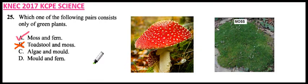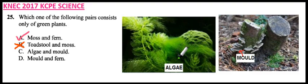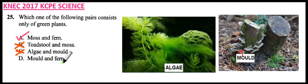We look at C: algae and mold. Let's see what kind of plants these are. Algae are those greenish plants that grow sometimes in stagnant water. This is algae and this is mold. If you go to the forest where there is a tree stump, you see some white growing plants — those are what we refer to as molds. So you can see the algae is green but the mold is not green; it is white. So C is wrong because of the mold.